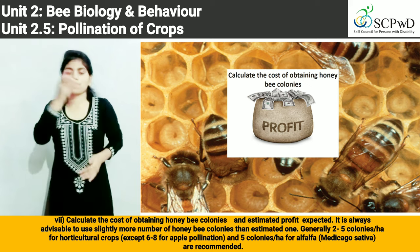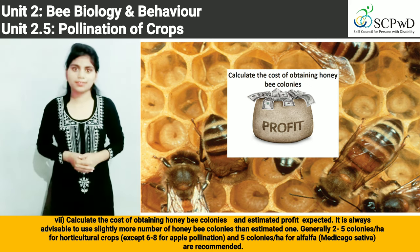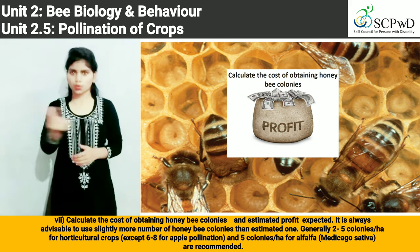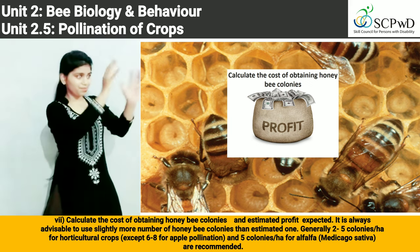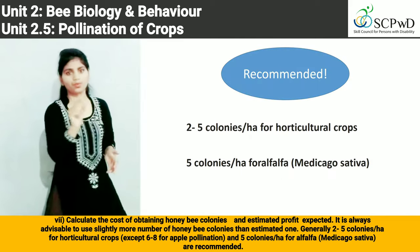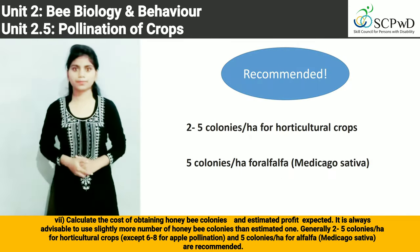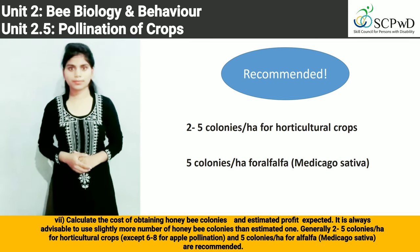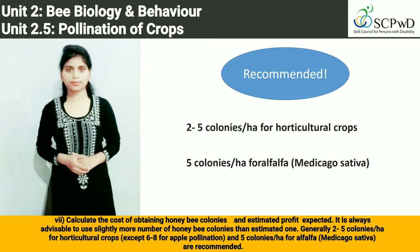It is always advisable to use slightly more honey bee colonies than the estimated number. Generally, 2–5 colonies for horticultural crops, except 6–8 for apple pollination, and 5 colonies for alfalfa (Medicago sativa) are recommended.